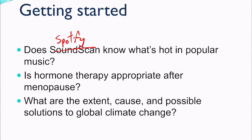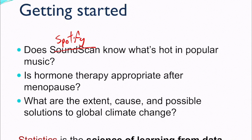Another example could be what are the extent, cause, and possible solutions to global climate change. We have proven statistically significantly that humans have caused climate change, so we could test what some solutions could be to help reverse or slow climate change. All of these require statistics, and statistics is the science of learning from data.